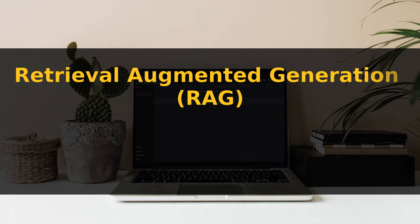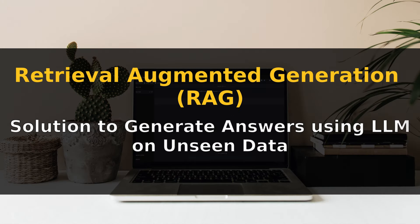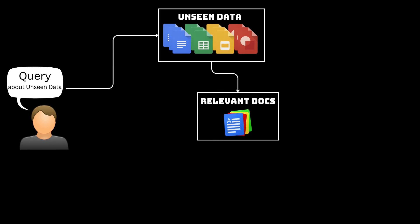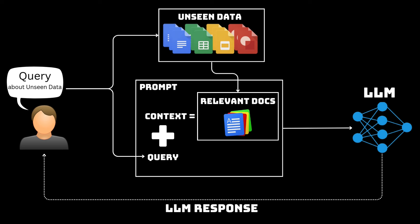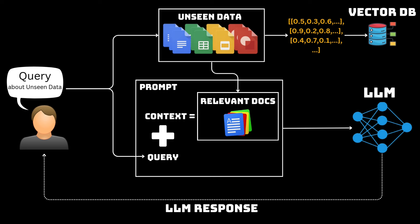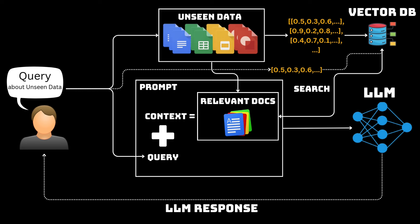Retrieval Augmented Generation, or RAG for short, is the most commonly used solution to generate answers using an LLM from unseen data. We retrieve chunks of data relevant to a user query from unseen data and then give it as context to the LLM to generate answers. To retrieve relevant chunks, we store embeddings of those chunks in a special kind of database known as a vector database. Whenever we want relevant documents, we search the vector database for documents whose embeddings match the query embeddings, and those documents are used as context in RAG apps.